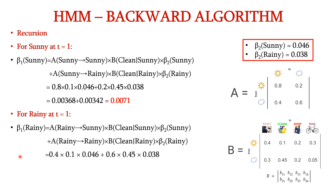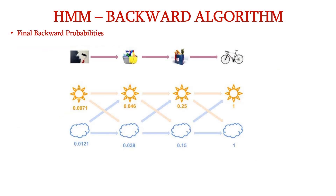For the rainy state at t=1: beta_1(rainy) = a(rainy→sunny) × b(clean|sunny) × beta_2(sunny) + a(rainy→rainy) × b(clean|rainy) × beta_2(rainy). Substituting: 0.4 × 0.1 × 0.046 + 0.6 × 0.45 × 0.038 = 0.0121. So beta_1(rainy) = 0.0121. These are the final backward probabilities for each observable state for the respective hidden states across all four time steps.